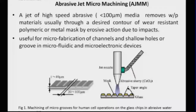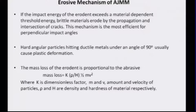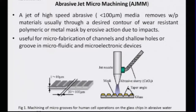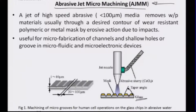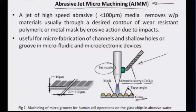The first example is work done by Matsumura in 2011, which talks about making micro channels or micro grooves on the surface of a glass substrate using abrasive jet micro machining, the AJMM process. As illustrated, there is a jet nozzle driving off material in the form of an abrasive slurry containing cerium oxide suspended in water — making this actually an AWJ process being utilized for the purpose of micro machining.